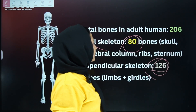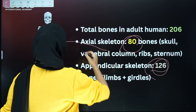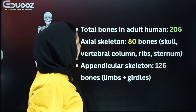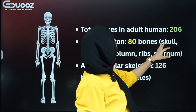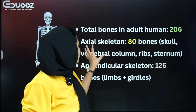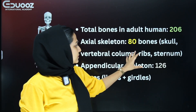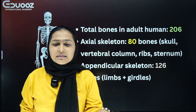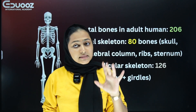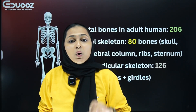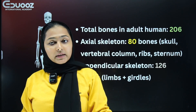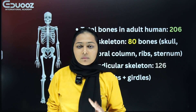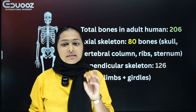The axial skeleton is formed by the skull, vertebral column, ribs, and sternum. So these are the components of the axial skeleton: skull, vertebral column, ribs, and sternum. We will now study the axial skeleton in detail.